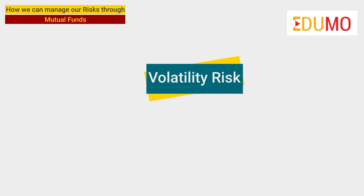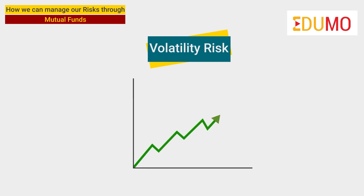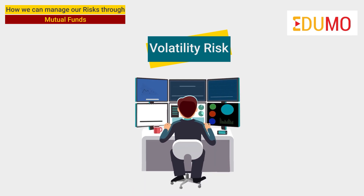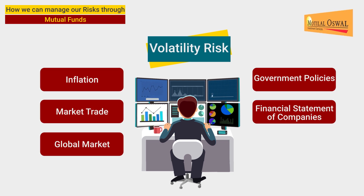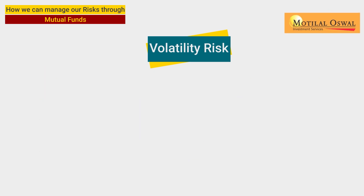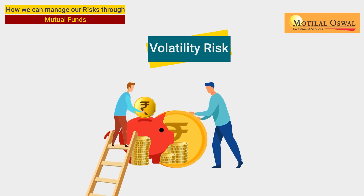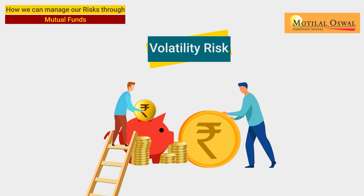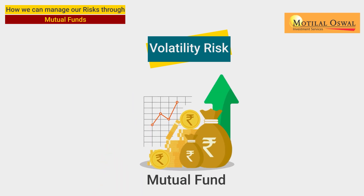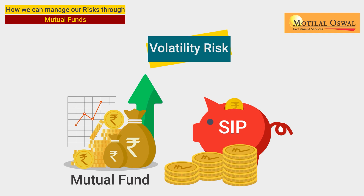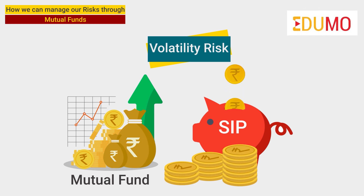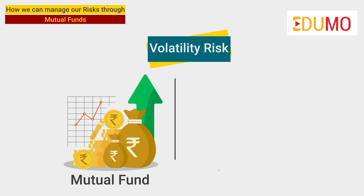The first one is volatility risk. This is the risk that comes from the possibility of an abrupt change in the value of a security. The market is a dynamic platform which is affected by various factors. Therefore, as investors, we will always be exposed to such a risk. To lessen the effect of this risk, we can invest in mutual funds, specifically through SIPs. By regularly depositing a fixed amount towards a fund through SIP, you can average out the overall effect of any volatility in the market.